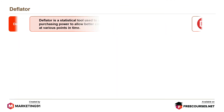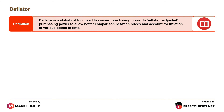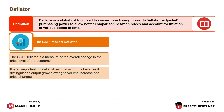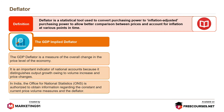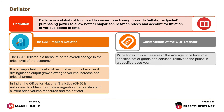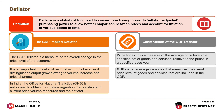Moving on to the deflator. A deflator is a statistical tool used to convert purchasing power to inflation-adjusted purchasing power, to allow better comparison between prices and account for inflation at various points in time. The GDP-implied deflator is a measure of the overall change in the price level of the economy. It is an important indicator of national accounts because it distinguishes output growth owing to volume increase and price changes. The GDP deflator is a price index that measures the average and overall price level of goods and services included in GDP, relative to the prices in a specified base year.